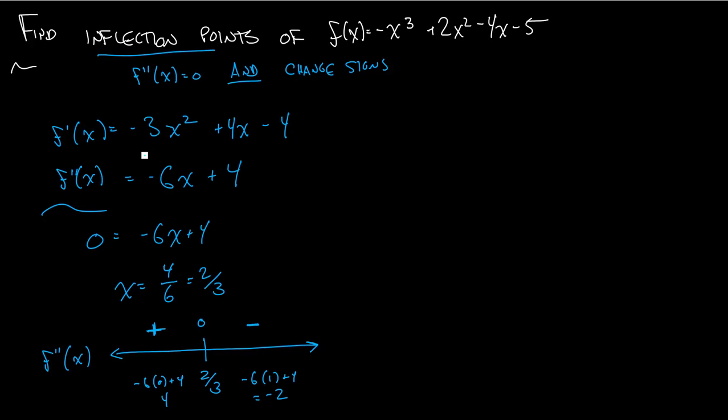And why does that help me? Well, then I know at 2 thirds that the second derivative is 0. That's what I solve for here. And because of this number line, I know that it changes signs, right? So big idea for inflection points: get the second derivative, set it equal to 0, check if your second derivative changes signs around that point that you found.